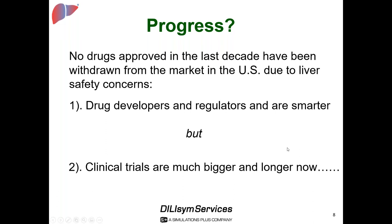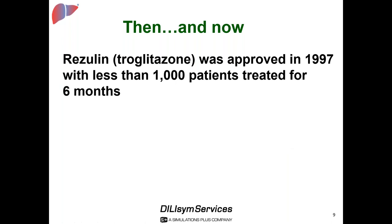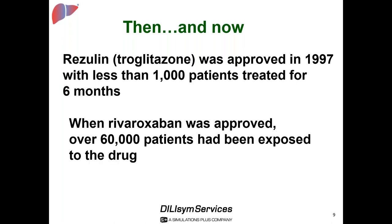Troglitazone is the poster child—a drug withdrawn due to acute liver failure and liver transplants. It was approved in 1997 when fewer than 1,000 patients with diabetes had been treated for six months. Today, new diabetes treatments require far more exposure, including Phase IV cardiovascular outcome studies. Rivaroxaban, the oral anticoagulant, wasn't approved until 60,000 patients had been exposed, largely due to liver safety concerns stemming from ximelagatran being withdrawn from worldwide markets.